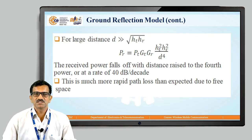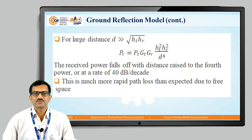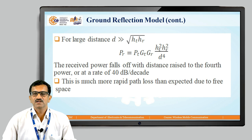For large distance D much greater than √(H_T·H_R), the received power P_R can be calculated as P_R = P_T·G_T·G_R·H_T²·H_R² / D⁴. The received power falls off with distance raised to the fourth power, at a rate of 40 dB per decade, which is much more rapid path loss than expected due to free space.